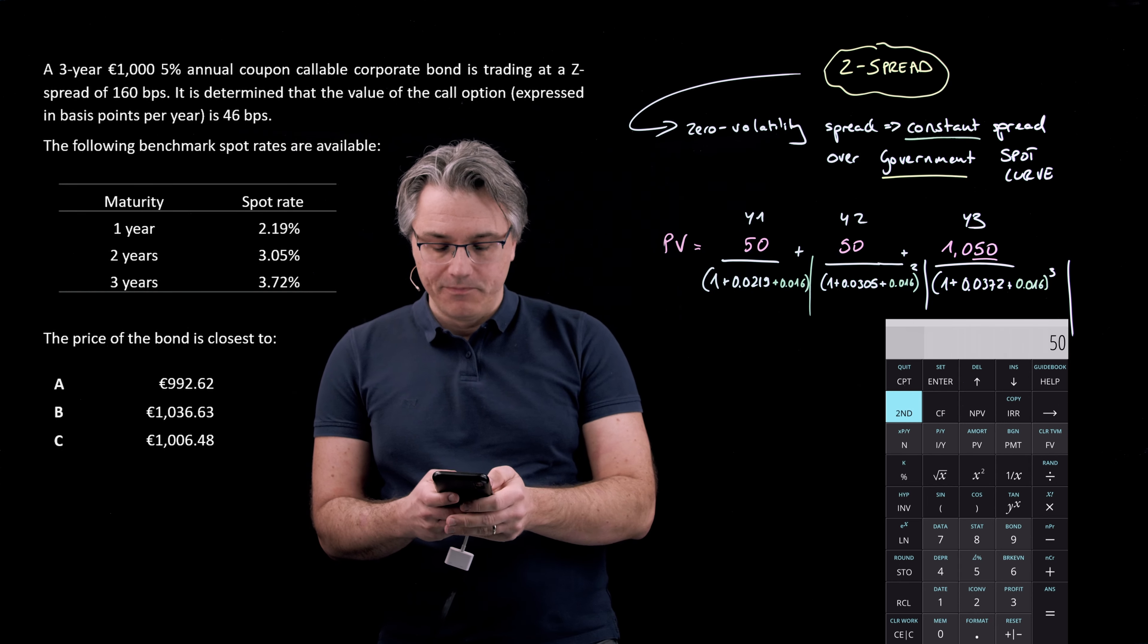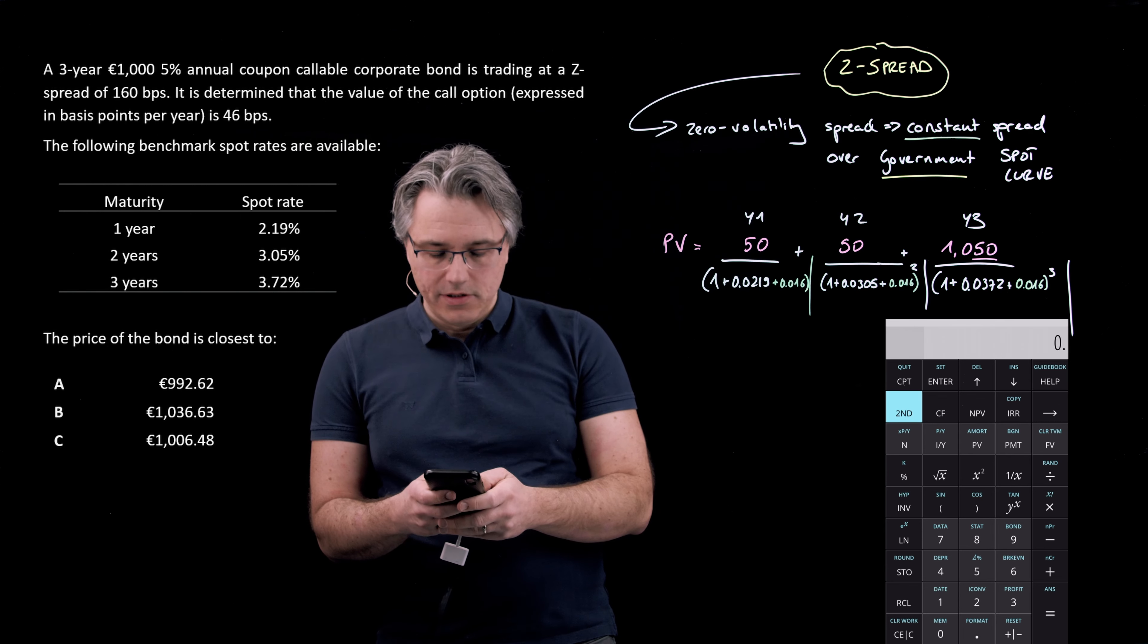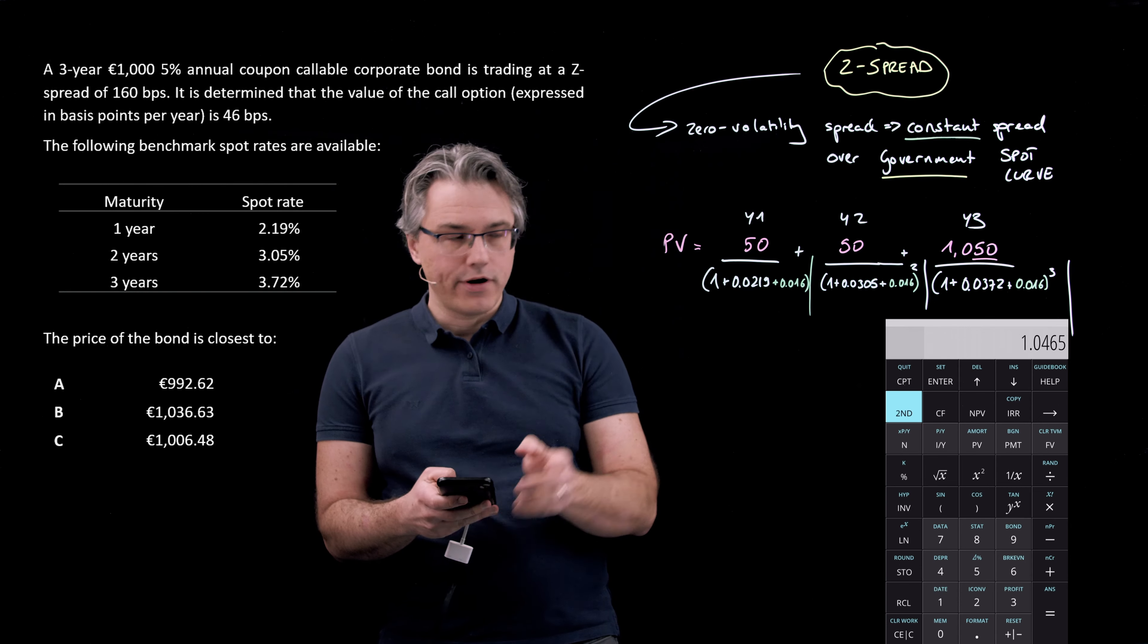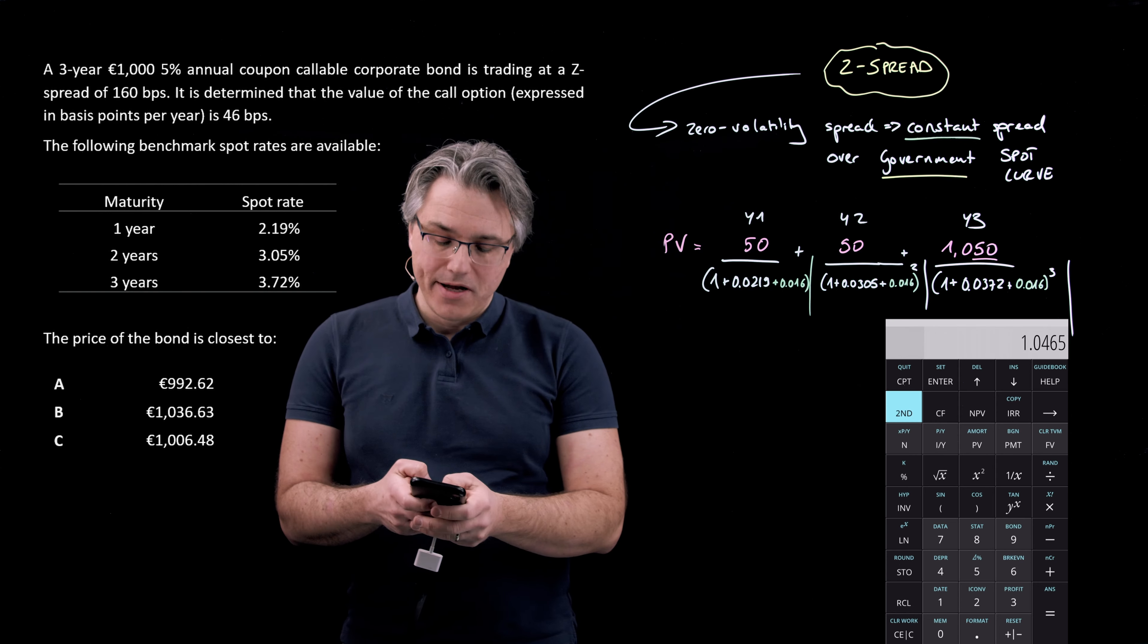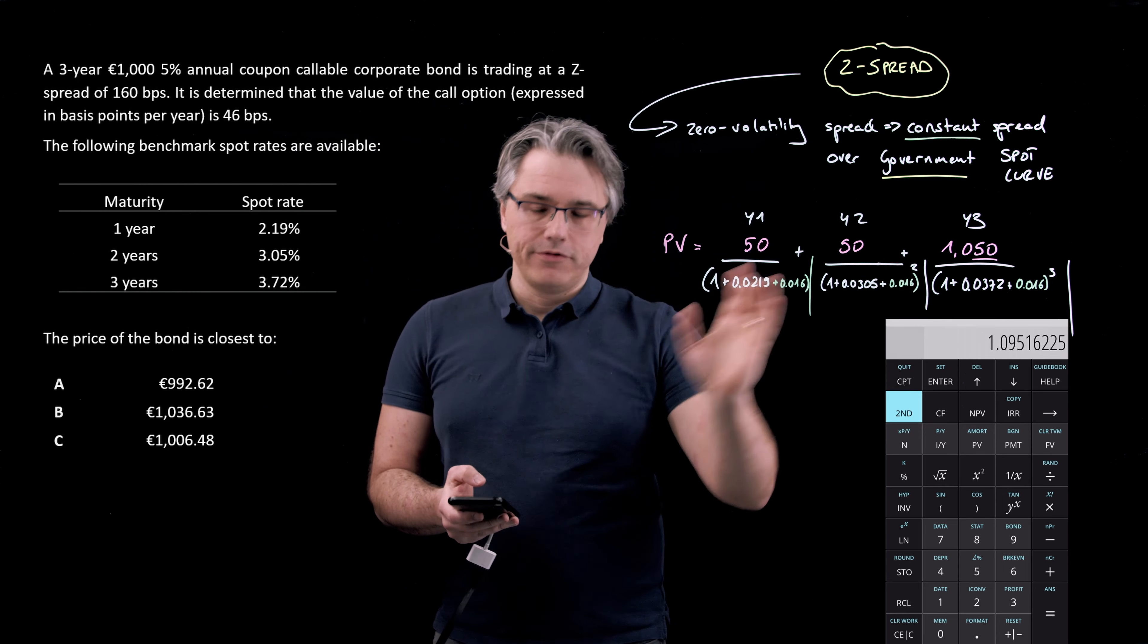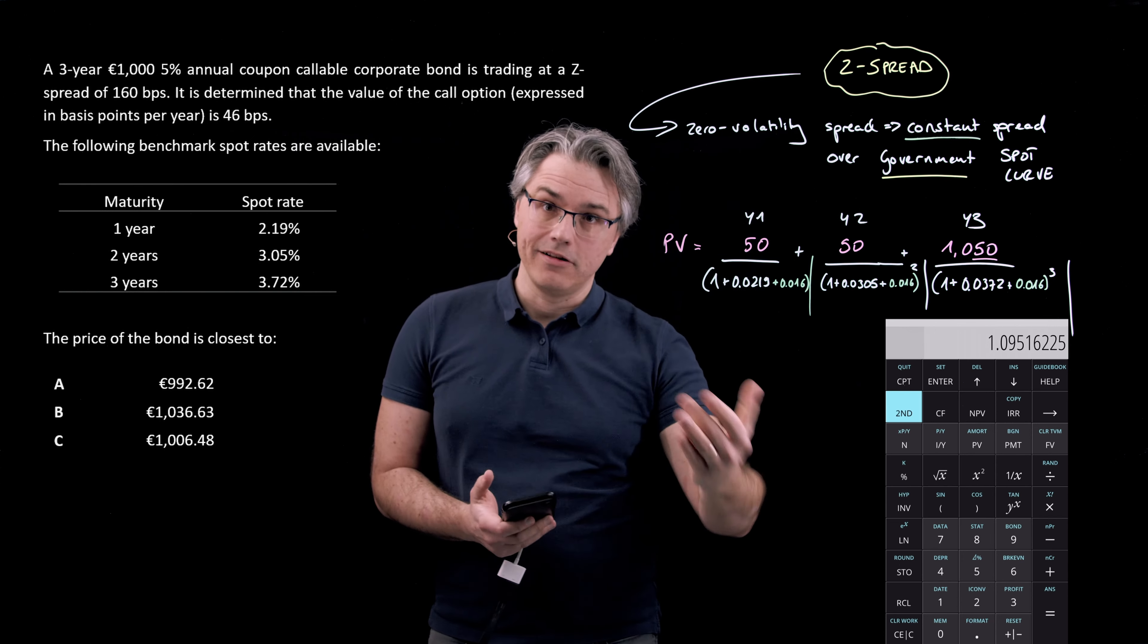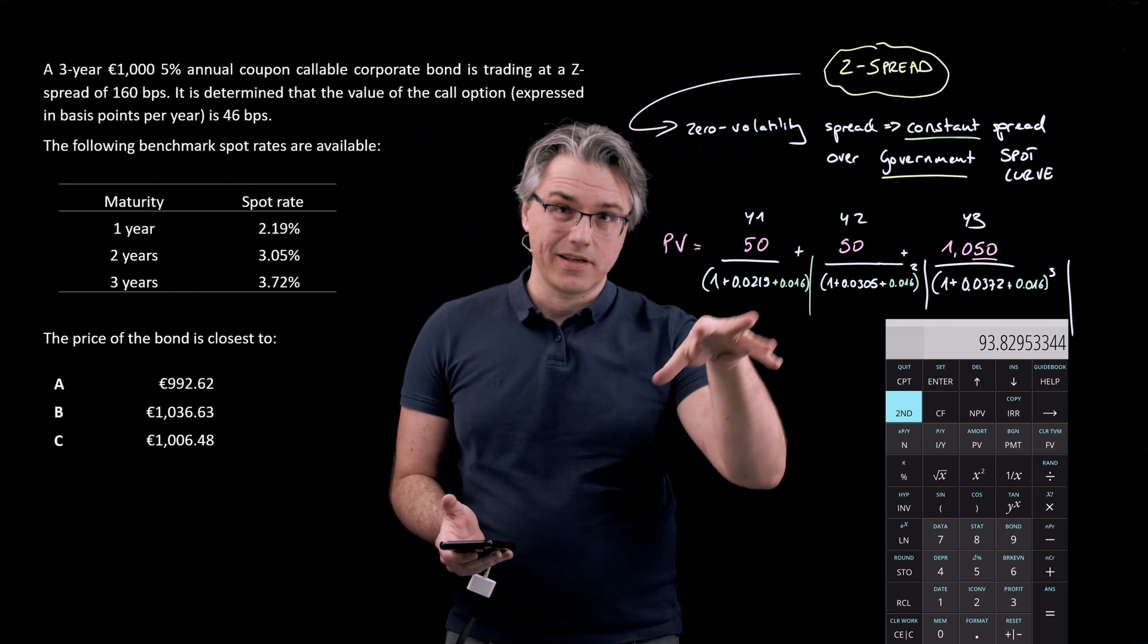The next one, 50 divided by, open a bracket again, 1 plus 0.0305 plus 0.016, close bracket, and we need to raise this to the power of 2. So I'm hitting the x squared key. It's raised this to the power of 2. And it does so before it does any division, because we're following the rules of algebra, hence algebraic operating system. Plus, and I can see the result for the two cash flows discounted, combined.